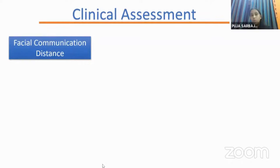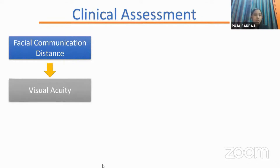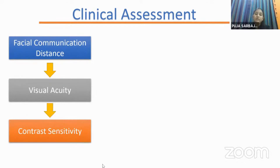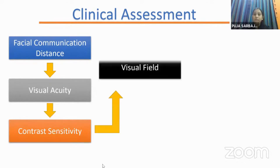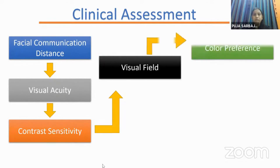In clinical assessment, I first assess facial communication distance — at what distance the child gives facial communication — and note it in my file. I change distance and gaze direction to observe tracking capability. For visual acuity, we avoid Teller acuity cards for children with CVI and instead use Lea paddles, facial cards, and other tools. For contrast sensitivity, we mainly use Hiding Heidi.